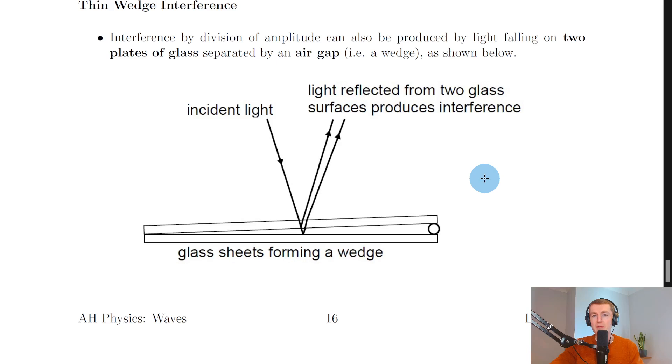What we have is a bit like for thin film interference, where we've got one reflected ray that has not undergone a phase change and then the other reflected ray has undergone a phase change of pi radians. These two rays of light are going to interfere and produce an interference pattern.